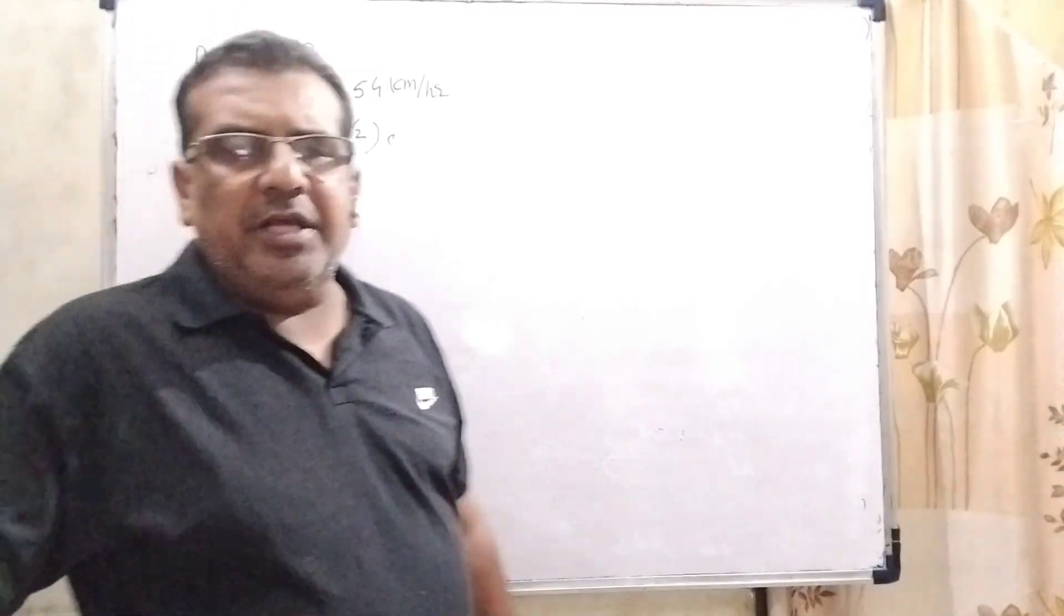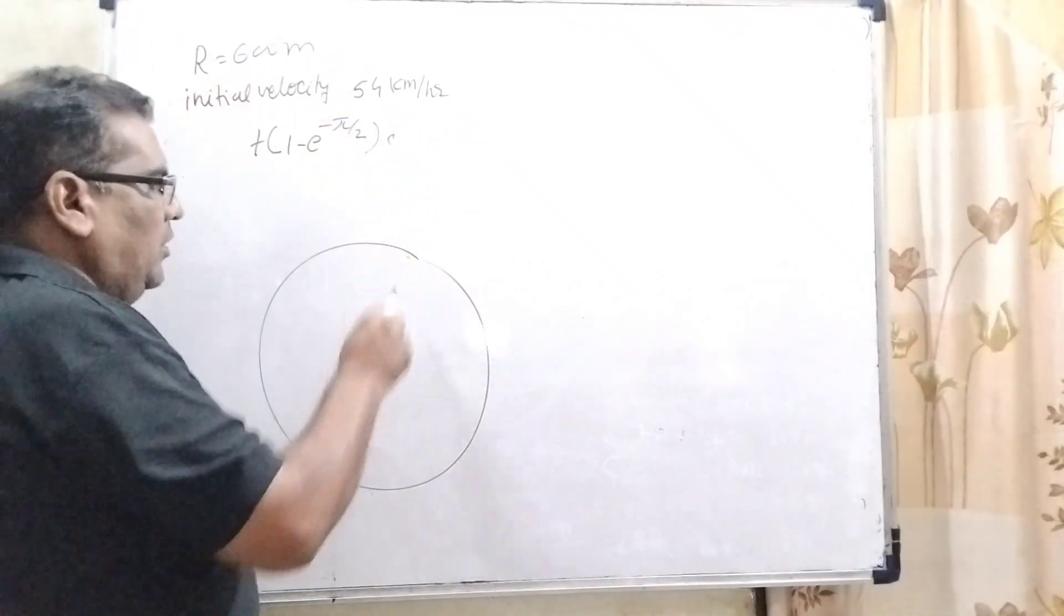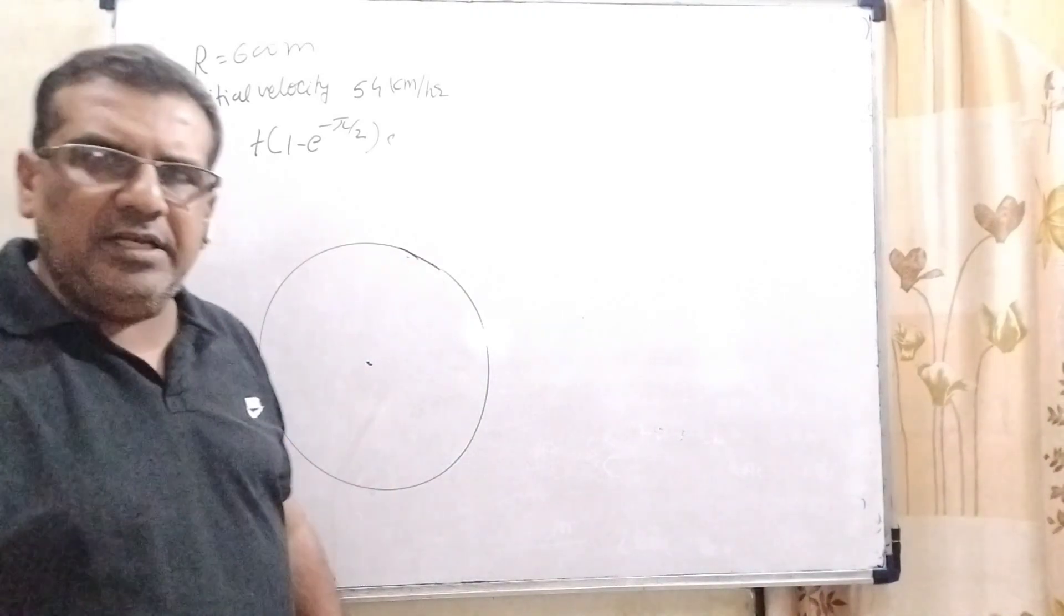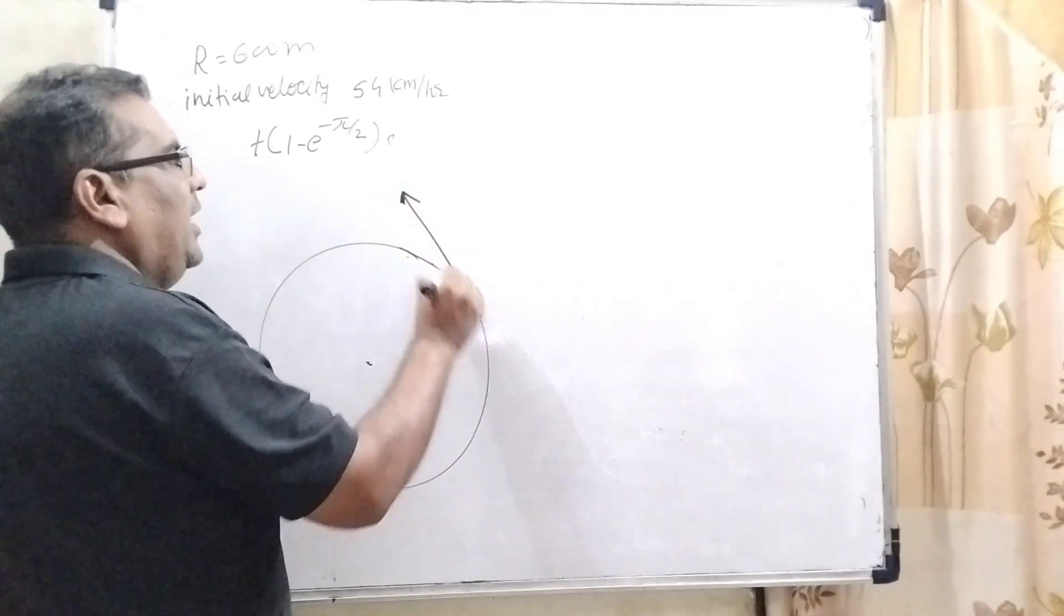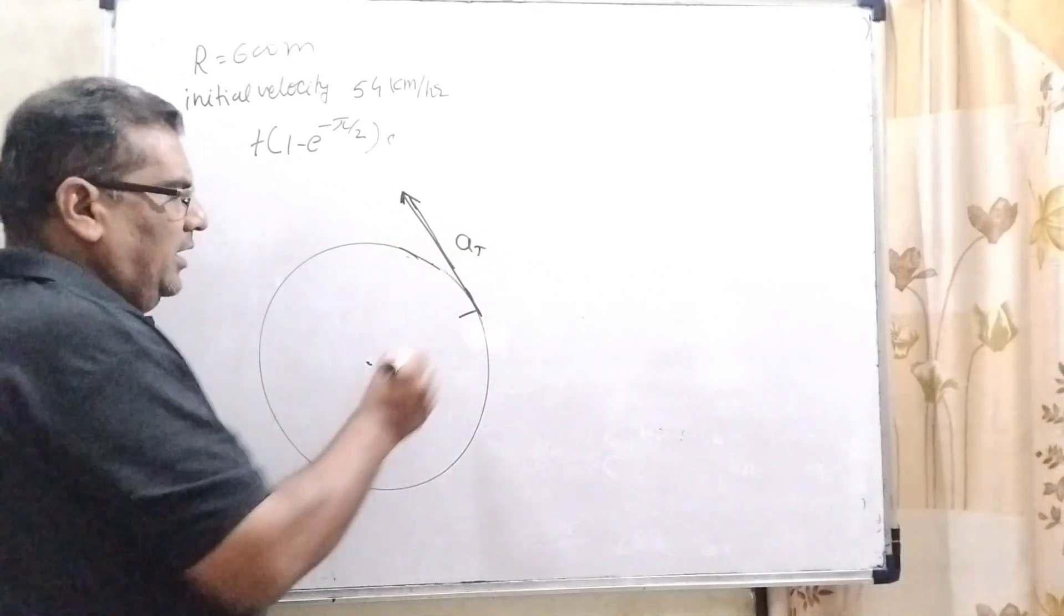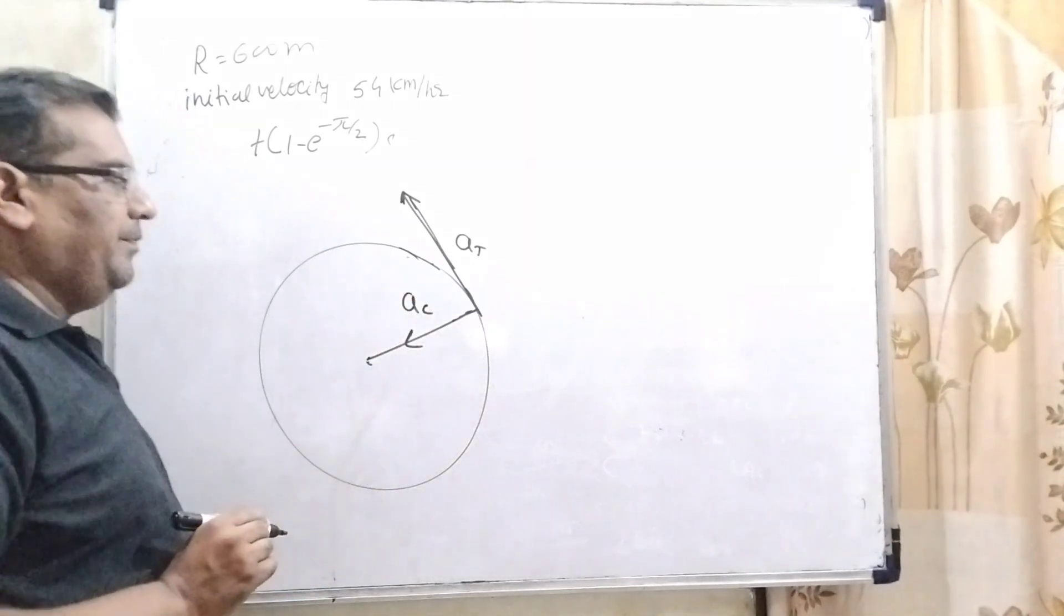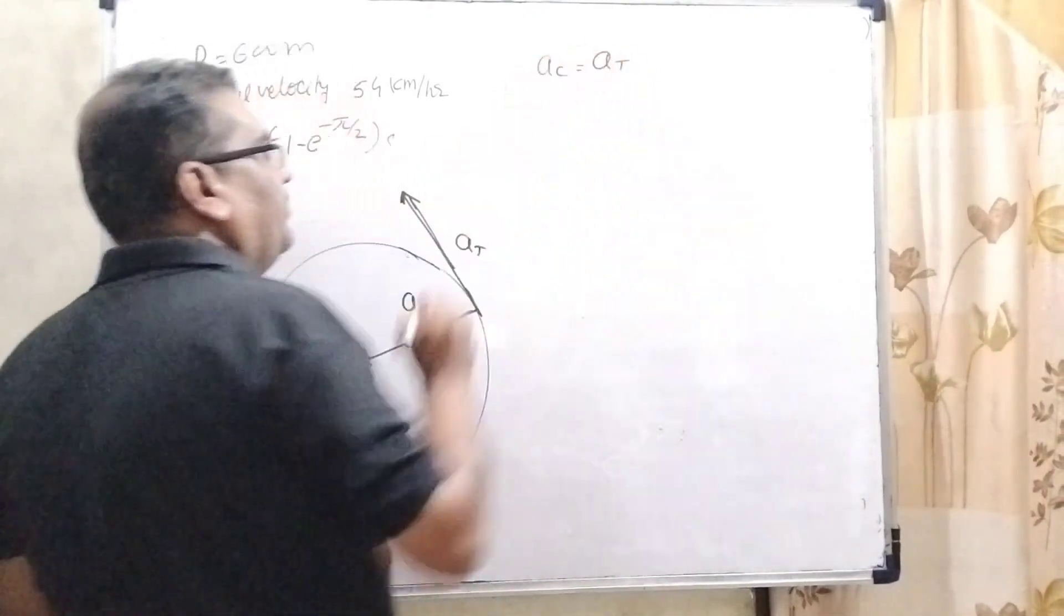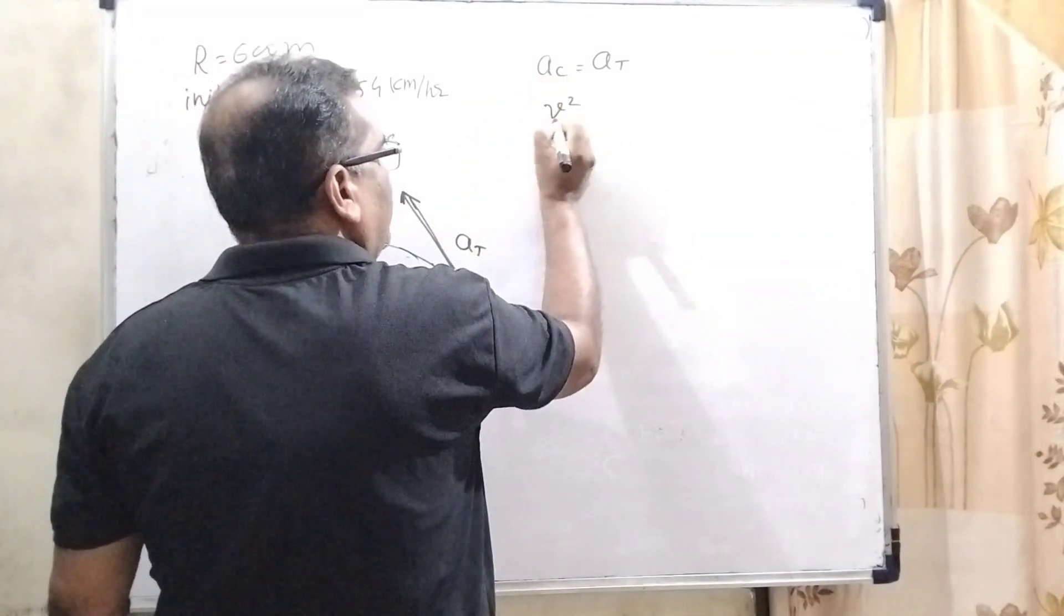This question is based on the application of integration. Given that a car is moving on a circular track and tangential acceleration and centripetal acceleration are equal. Tangential acceleration means acceleration along the tangent, or linear acceleration. And acceleration towards the center is centripetal acceleration.